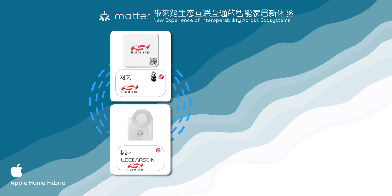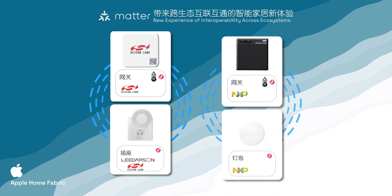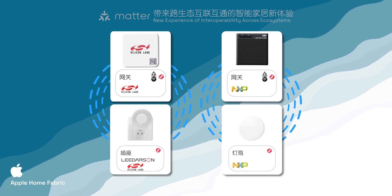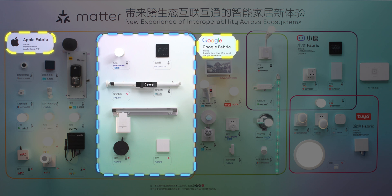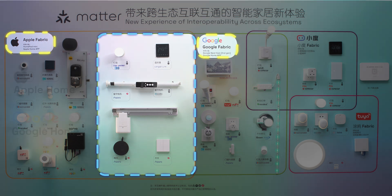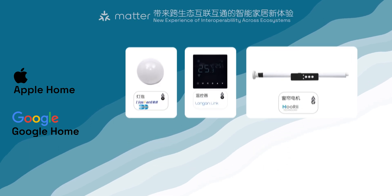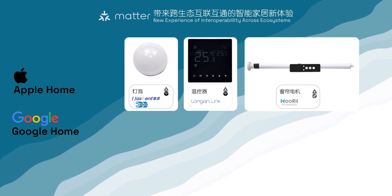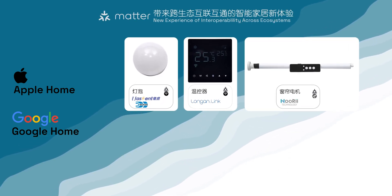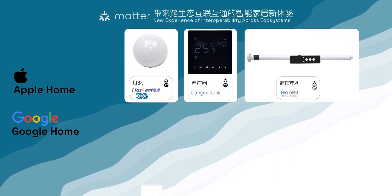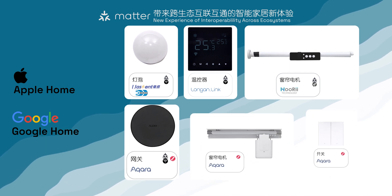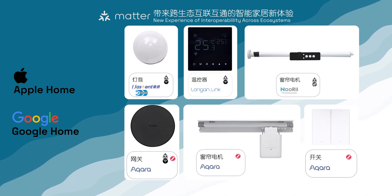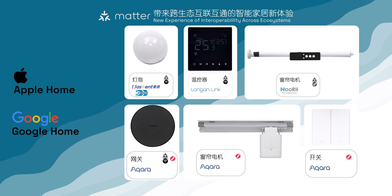Zigbee bulb is connected via an NXP bridge. Thanks to the multi-admin feature, some devices here are both on the Apple Home fabric and Google Home fabric, including the USN bulb using Beken chip, Lonon-Link thermostat, Huri curtain motor, and Aqara bridge, to which a Zigbee switch and curtain motor are connected.